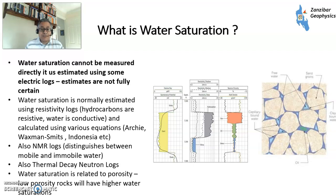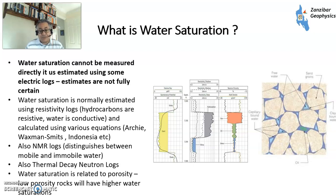The most important thing about water and hydrocarbon saturations is that you can't measure them directly. Unlike porosity or shale fraction, you have to calculate them from secondary sources - mainly resistivity logs, because hydrocarbons are resistive and water is conductive. There are various equations to do that, which I'll talk about.